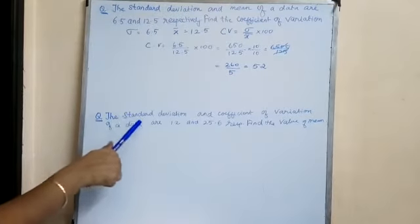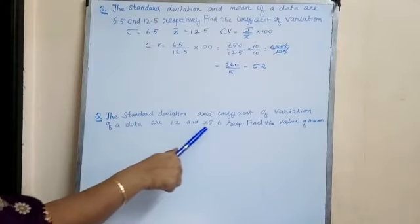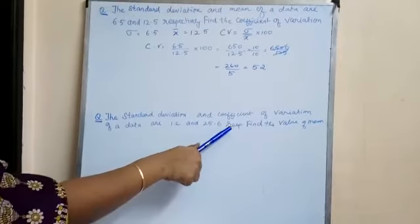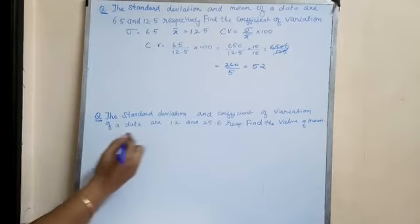The next question is: the standard deviation and coefficient of variation of a data are 1.2 and 25.6 respectively. Find the value of mean.